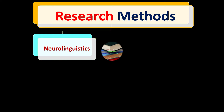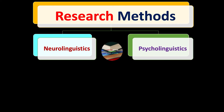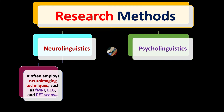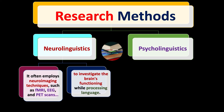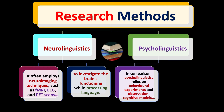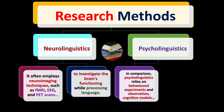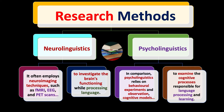Now, research methods. Both neurolinguistics and psycholinguistics differ in how they approach research. Neurolinguistics often employs neuroimaging techniques such as fMRI, EEG, and PET scans to investigate the brain's functioning while processing language — it is closely aligned with pure science. In comparison, psycholinguistics relies on behavioral experiments, observation, and cognitive models to examine the cognitive processes responsible for language processing and learning.